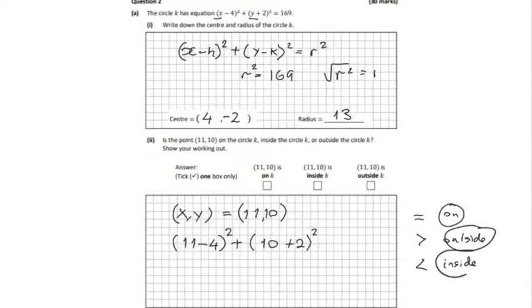So let's compute out the values. We're going to get 7² + 12², and we get 193 on the right-hand side. 193 is greater than 169, therefore it's outside.